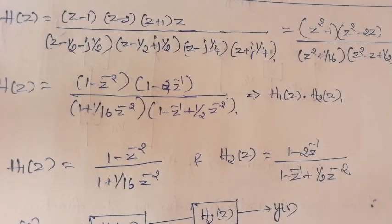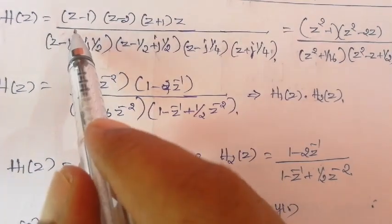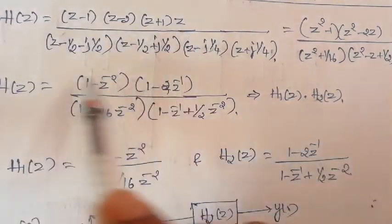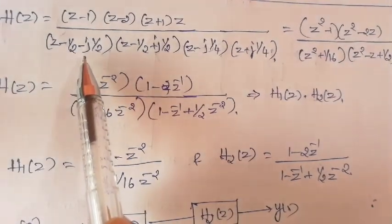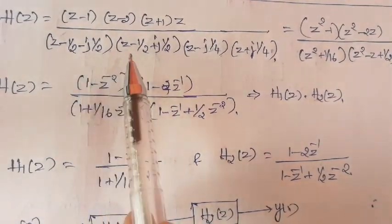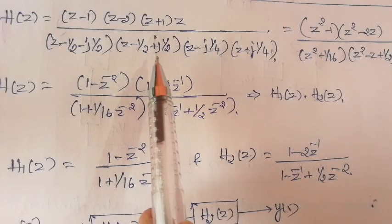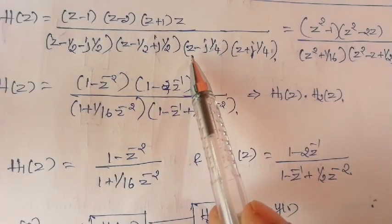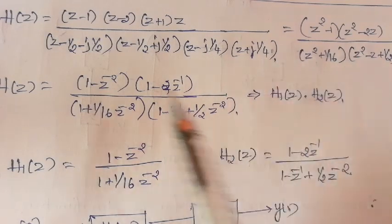In this video we will discuss one more example for cascade relation. H of z equals z minus 1 multiplied by z minus 2, divided by z plus 1 multiplied by z minus 1/2 minus j1/2, multiplied by z minus 1/2 plus j1/2, multiplied by z minus j1/4, multiplied by z plus j1/4.